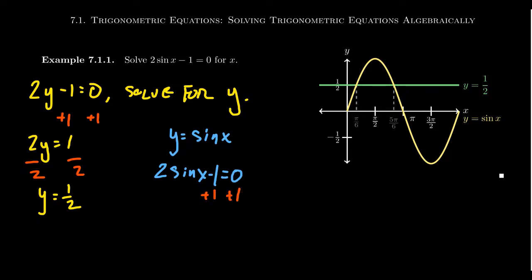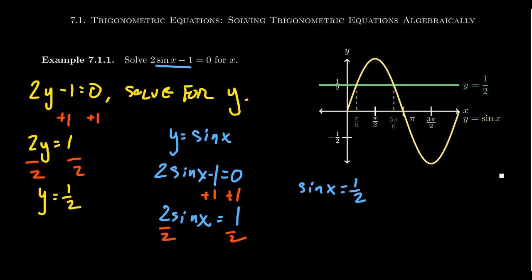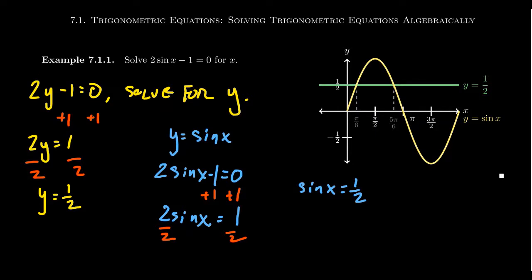Because if we think about this original equation, 2 sine of x minus 1 equals 0, the exact same steps apply. Add 1 to both sides to get 2 sine of x equals 1, then divide both sides by 2. We end up with sine of x equals 1/2. Solving this equation is basically just like solving any linear equation — the only difference is we end with this trigonometric expression.